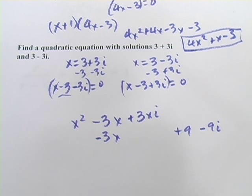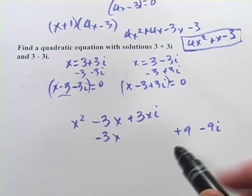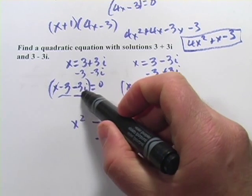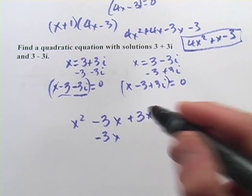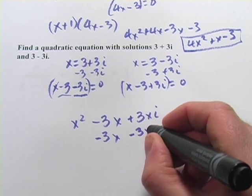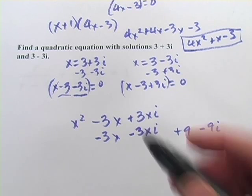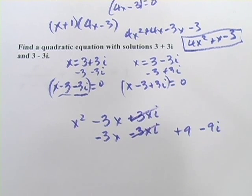And negative 3 times 3i is negative 9i. Looks like we're getting a lot of terms here, but I guarantee this is going to get simpler in just a minute. Let's go on to the negative 3i. So negative 3i times x is negative 3xi. Aha, those two add up to 0, so we can get rid of those.